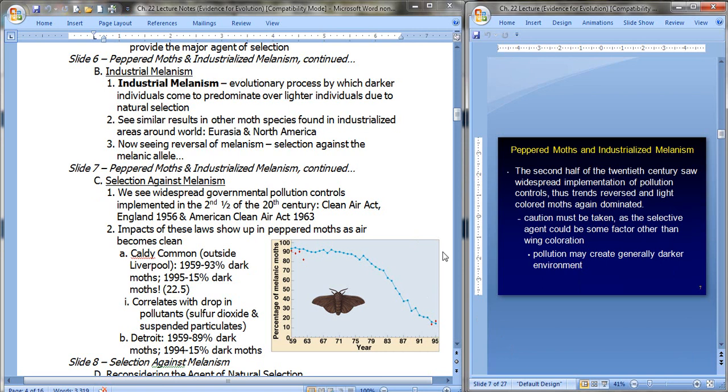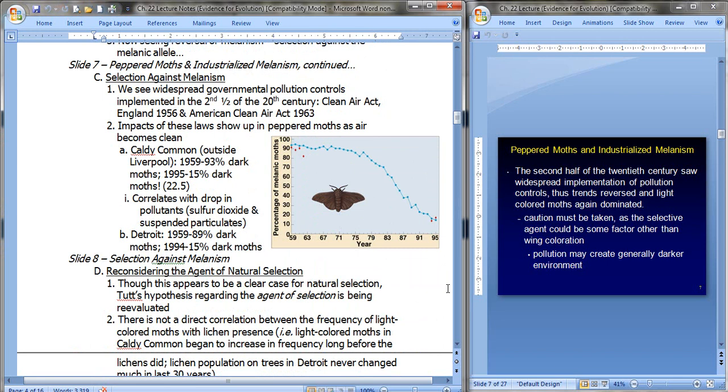So let's talk about that. We see widespread governmental pollution controls that were implemented in the second half of the 20th century. The Clean Air Act in England in 1956 and the American Clean Air Act in 1963. The impacts of these laws showed up in the peppered moths as the air became clean. In England, in Caldecommon, outside Liverpool, in 1959, 93% of their moths were dark moths. And look, 36 years later, 15% of the moths were dark moths. So notice the decline. This actually correlates with a drop in pollutants such as sulfur dioxide and suspended particulates. In Detroit, we see a similar pattern. In 1959, 89% dark moths. In 1994, 15% dark moths. So as the air and surfaces became cleaner, the moths tended back to their normal coloration pattern.